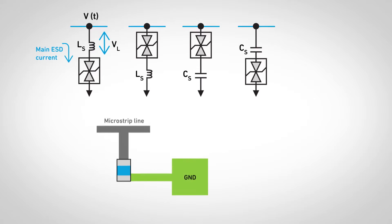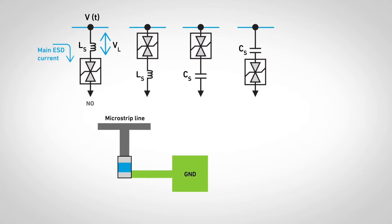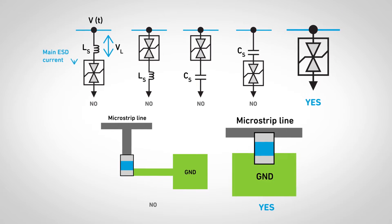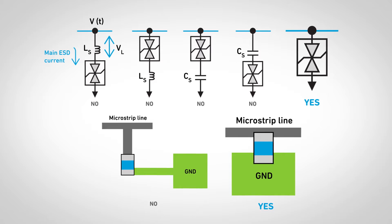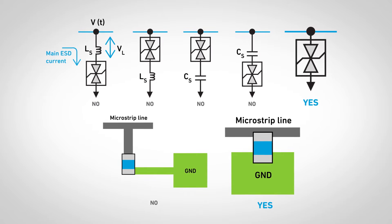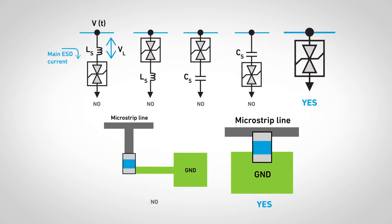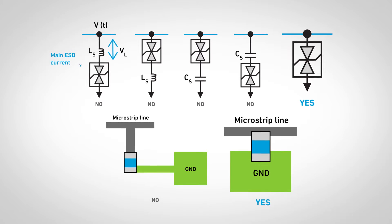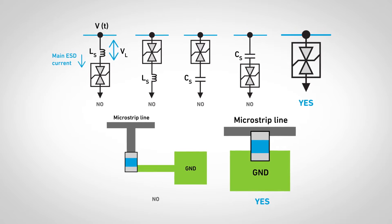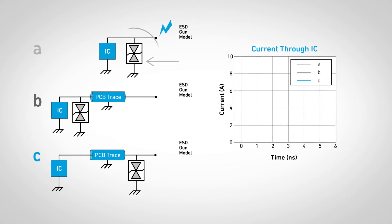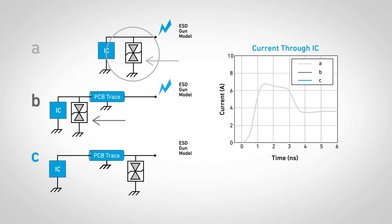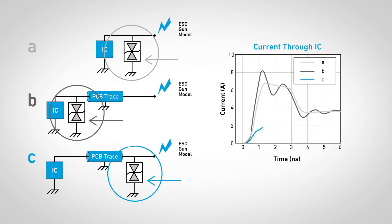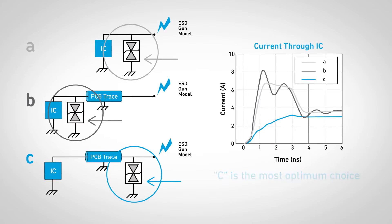PC board location and design is important as it alters performance. Pay attention to the ESD component grounding and not just the RF isolation in the ground scheme. Positioning the TVS diodes close to the antenna provides the best outcome.